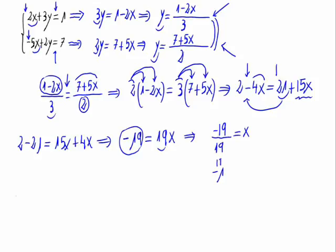y is equal to 7 plus 5x divided by 2, or 7 plus 5 times minus 1, minus 5 divided by 2. 7 minus 5, 2 divided by 2, 1.